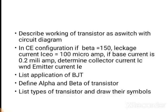Define alpha and beta — what is alpha and beta in a transistor — this might be asked for two marks only. List types of transistors and draw their symbols — NPN and PNP — and you have to draw their symbols.